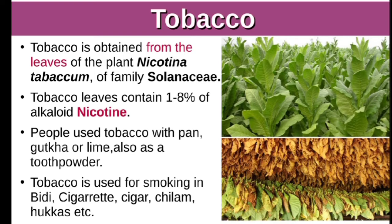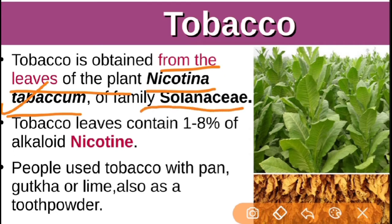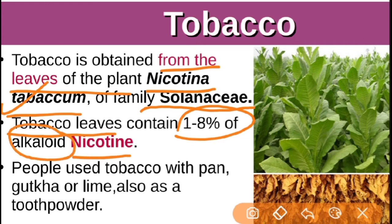The second intoxicant we will study is tobacco, which has been used in India from time immemorial. Tobacco is obtained from the leaves of the plant whose scientific name is Nicotiana tabacum — this is important for board exams. It belongs to the family Solanaceae. Tobacco leaves contain a chemical known as nicotine, an alkaloid present in the leaves in the amount of 1 to 8%, which even in this small amount produces very strong stimulation.